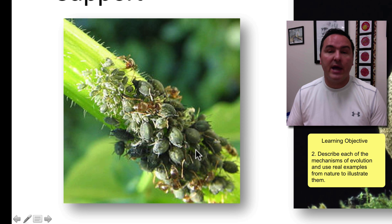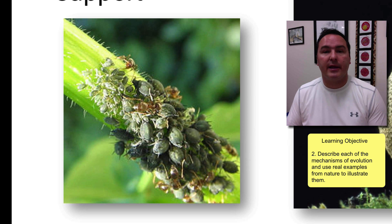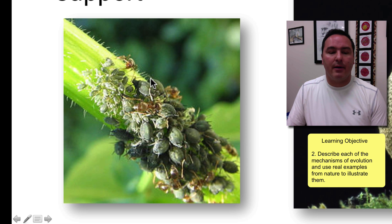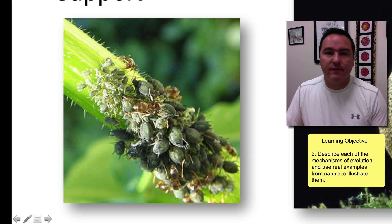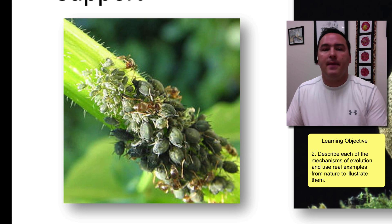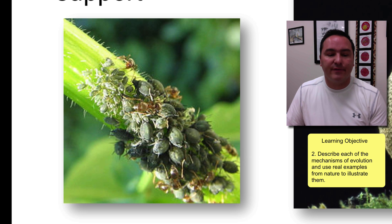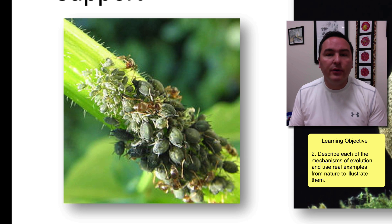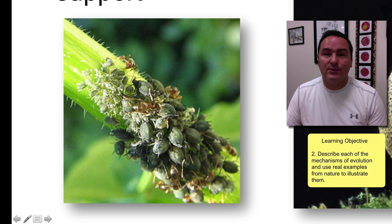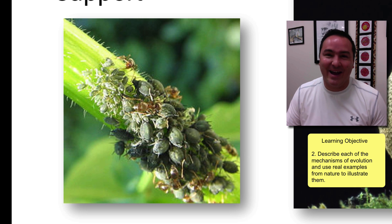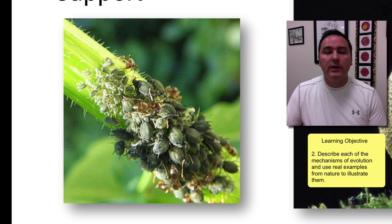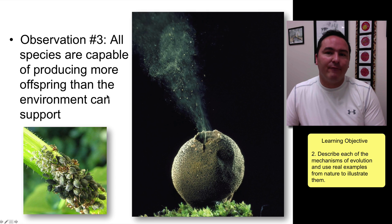For aphids, their generation time is much shorter than elephants. It would take only a few years for, if every single aphid survived and reproduced, this entire earth to be overrun with aphids. If you do the same thought exercise with bacteria, it would only take a couple of weeks. So clearly, the environment cannot support every single offspring — some offspring are going to die.